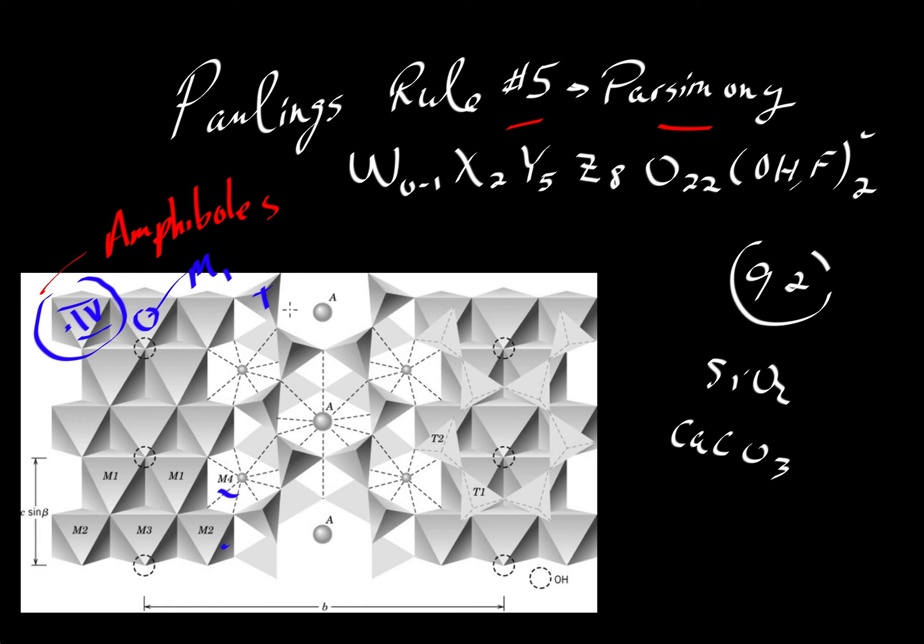And then we have these large open A sites. These A sites are the center of these rings that are formed by the tetrahedra. So you can see these tetrahedra are corner sharing. And as they share their corners to make these two chains, remember amphiboles are an inosilicate, we have two chains of tetrahedra.